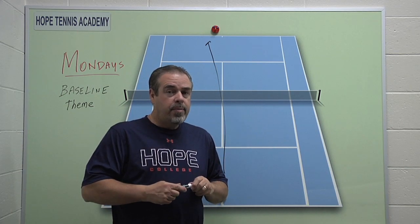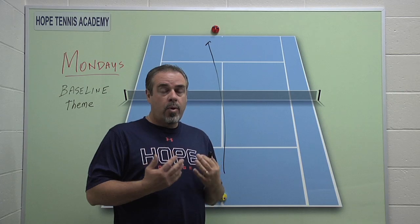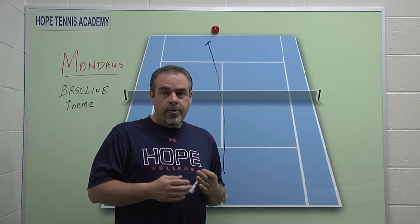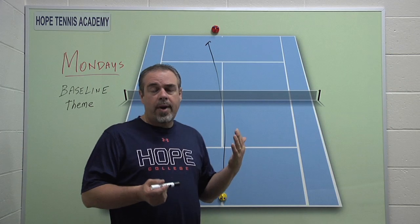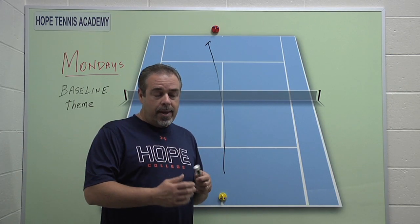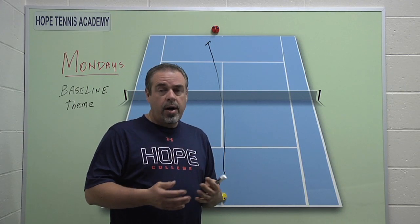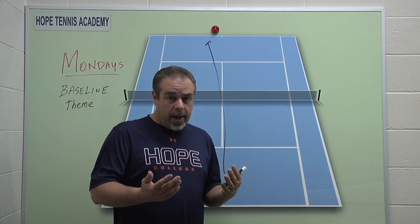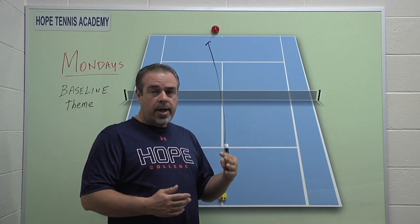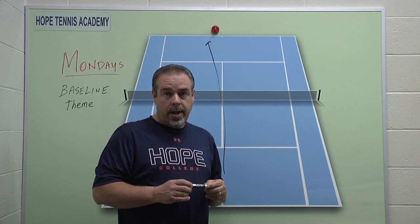Reds aren't that common, but they exist, and greens aren't that common either. The most important ball to master is the yellow ball. The yellow ball is just any typical rally ball. On the power scale, a red might be something you hit back at a three or four. A typical everyday rally ball is going to be more like five, six, maybe seven on the power scale. And a green is really more like eight or nine.